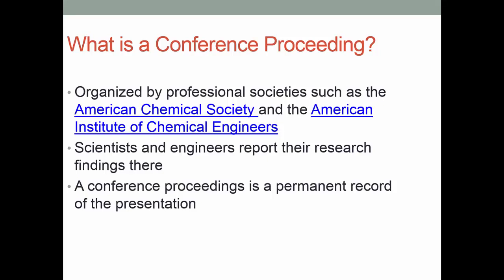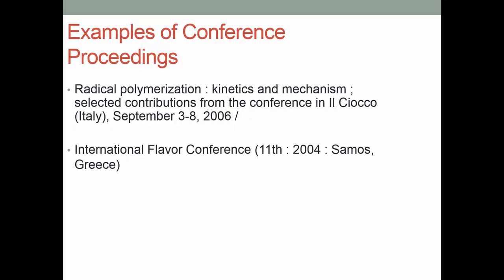What is the conference proceeding? Professional societies like the American Chemical Society and the American Institute of Chemical Engineers have conferences all the time, so that scientists and engineers can report their original research. But only the people at the conference hear it, so there must be a permanent record of what goes on. Conferences can be one-time events or held yearly, every two years, and so on. Here are some examples of conference proceedings — for instance, the International Flavor Conference, the 11th in 2004 in Greece — a very important source of original research.